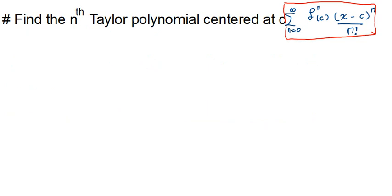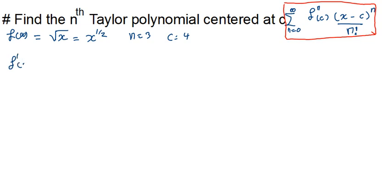For the second example, f(x) equals the square root of x, which is x to the power 1/2, with n equals 3 and c equals 4. The first derivative f prime of x equals 1 over (2 times the square root of x).